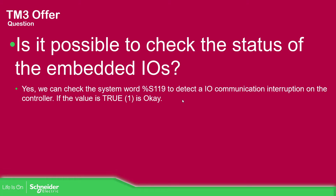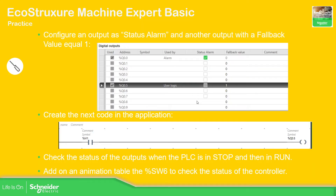To check if there is a problem with one of the outputs or IOs, it's simple. If the internal bus of the M221 has a problem, we need to check the system bit %S119 to see if there is an issue. If the value is true, then there is no problem and everything is alright.